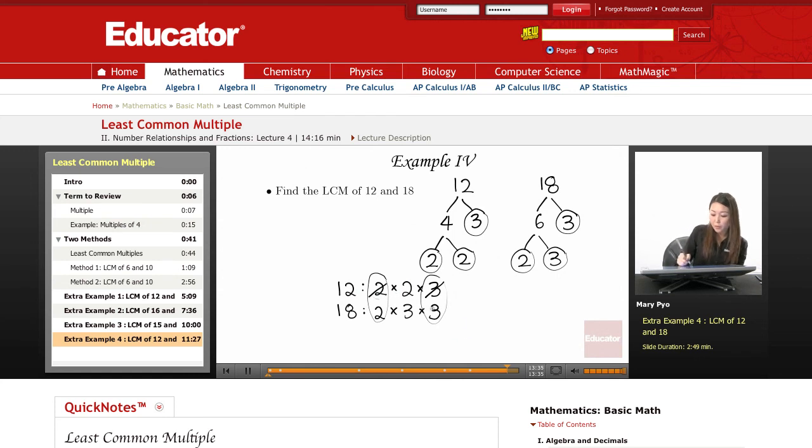So I take all the remaining numbers, this one, this one, and these two, and I'm going to multiply them out to find the least common multiple. So it's going to be 2 times 2 times 3 times 3.